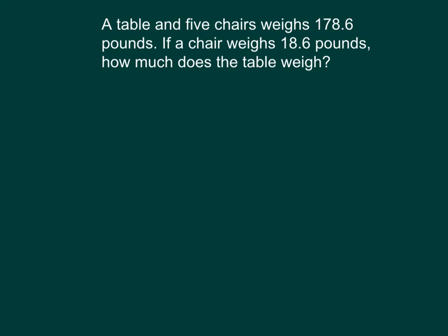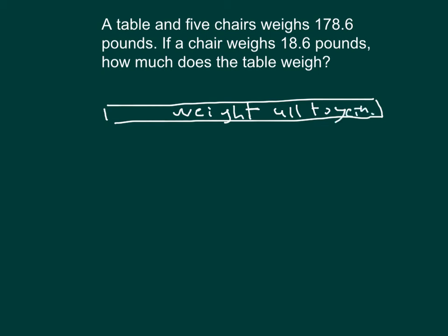Here's one final problem. A table and five chairs weighs 178.6 pounds. If a chair weighs 18.6 pounds, how much does the table weigh? So let's start with a tape diagram. We'll start with the total amount. And so we're given the total amount, and then so this total amount is the weight altogether. That weight altogether of not only the table, but also the five chairs. And that weight altogether is given to us at 178.6 pounds. Now that weight is of the table and five chairs. Chair weighs 18.6 pounds.